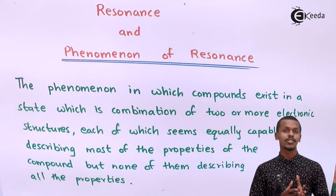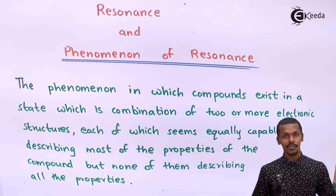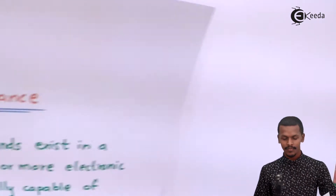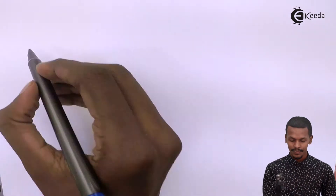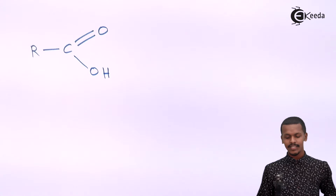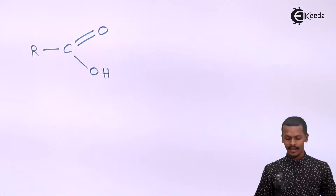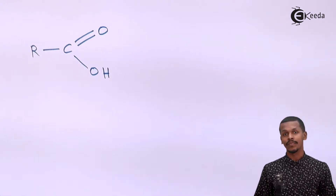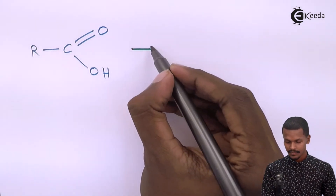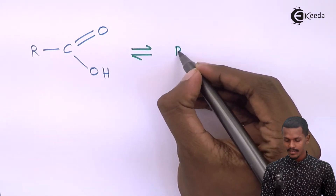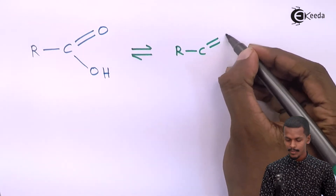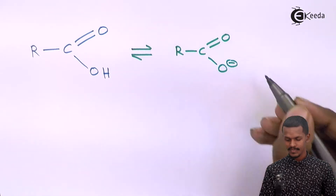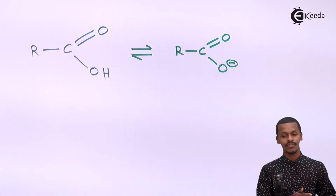Let me give you a short example to understand what resonance actually is. Resonance effects are shown by certain kinds of molecules. Suppose we have a carboxylic acid — on dissociation, we get two types of species.